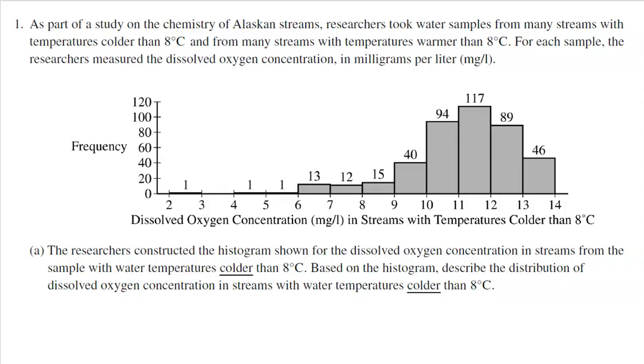Here was the question. As part of a study on the chemistry of Alaskan streams, researchers took water samples from many streams with temperatures colder than 8 degrees Celsius and from many streams with temperatures warmer than 8 degrees Celsius. For each sample, the researchers measured the dissolved oxygen concentration in milligrams per liter.